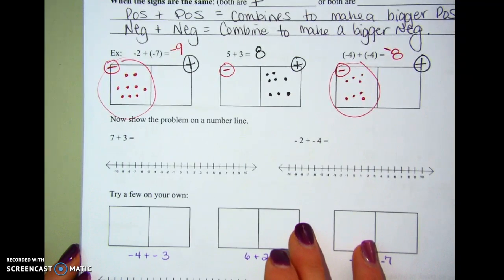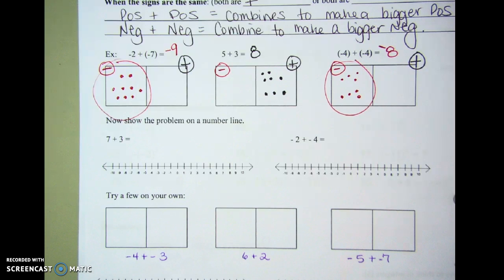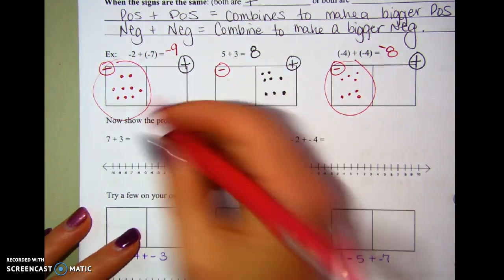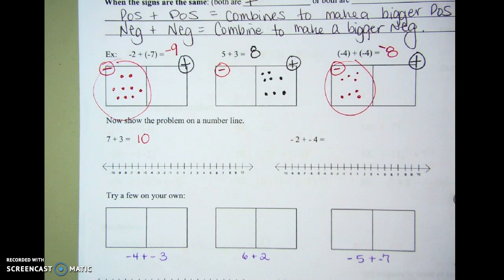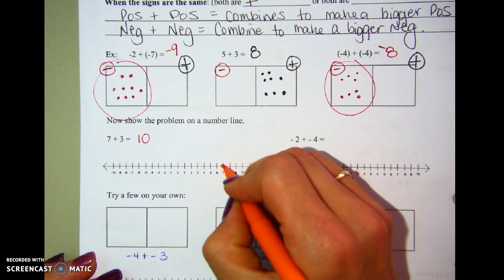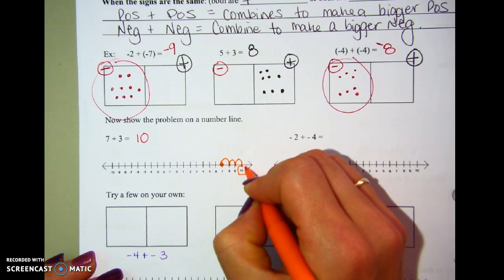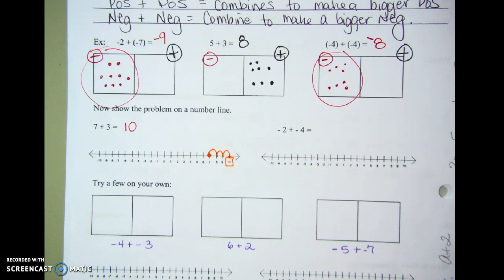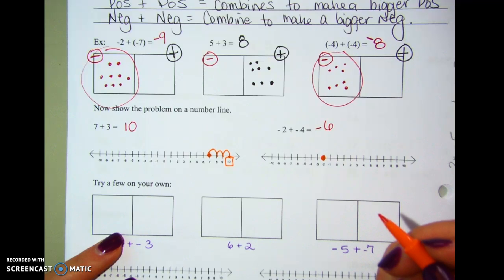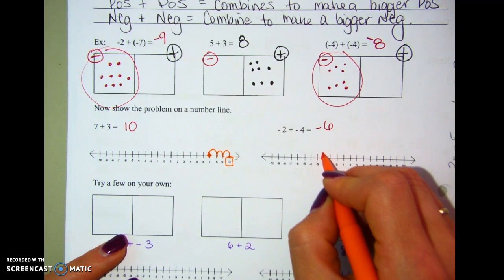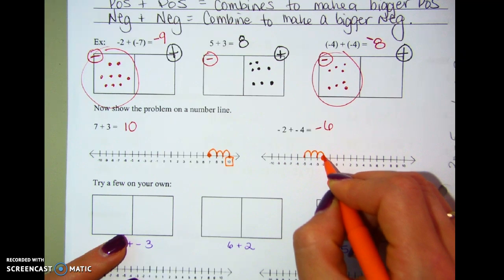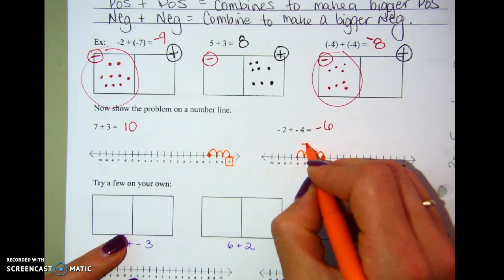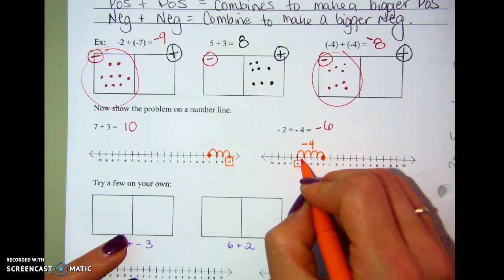We can also use a number line. For seven plus three: two positives combine to make a bigger positive. Starting at seven and adding three, I move to the right and end up at ten. For negative two plus negative four: starting at negative two and adding negatives, I move to the left — one, two, three, four — and I end up at negative six. That's a bigger negative, which is what we expected.